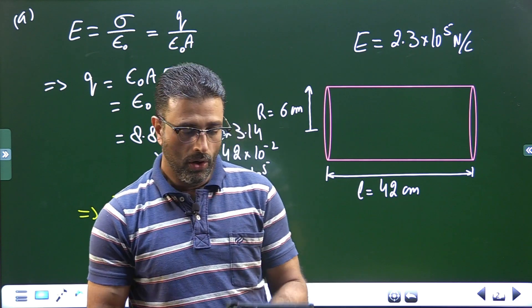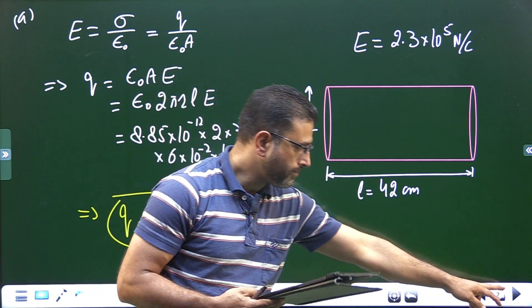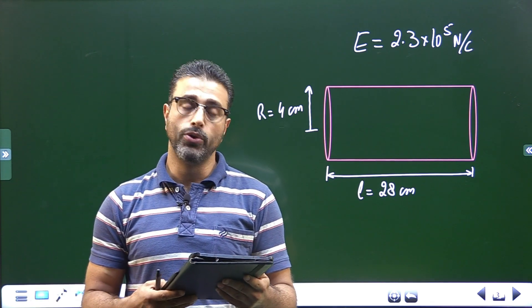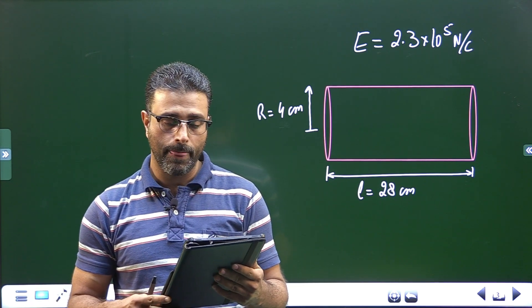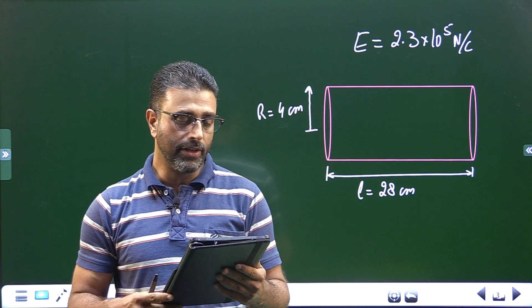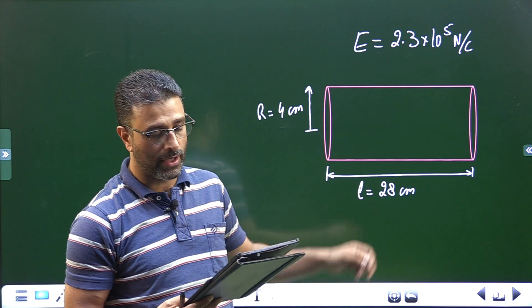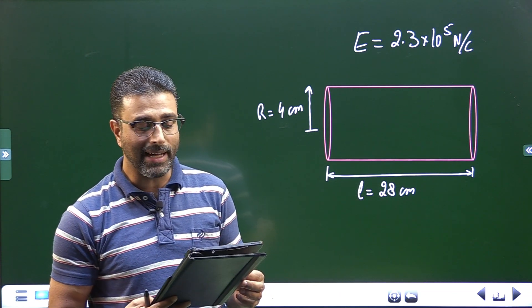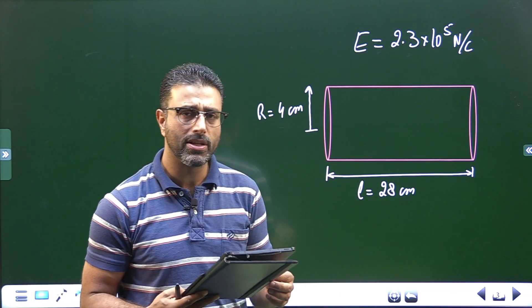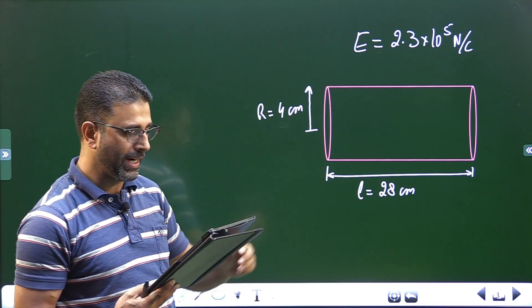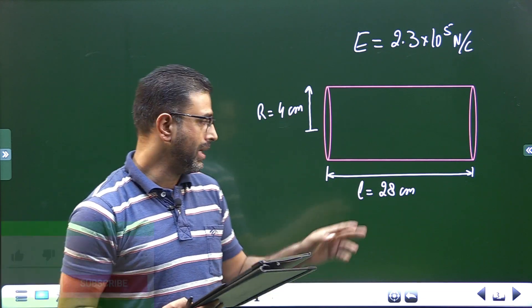Then part B: the manufacturer wishes to produce a desktop version of this machine. This requires reducing the drum length to 28 centimeters, so new length of the drum is 28 centimeters, and the diameter to 8 centimeters. Diameter is 8, that means radius is 4 centimeters.